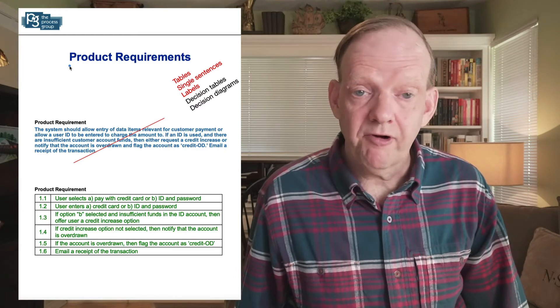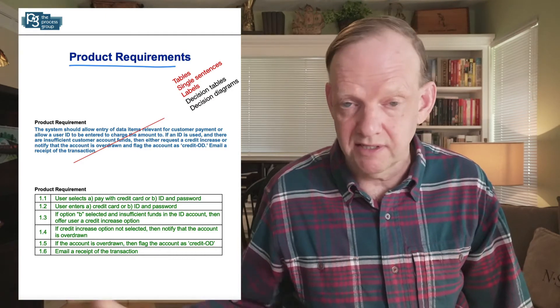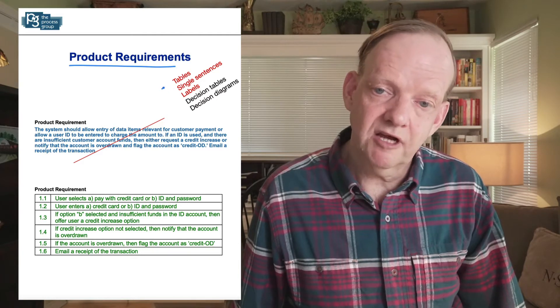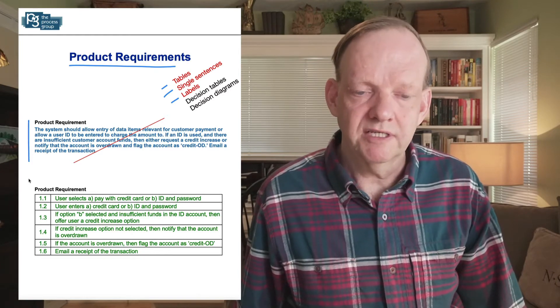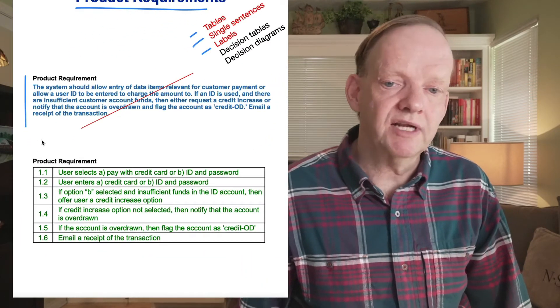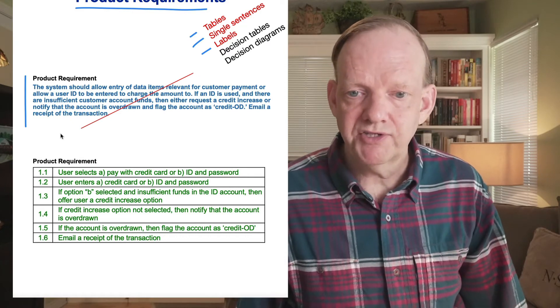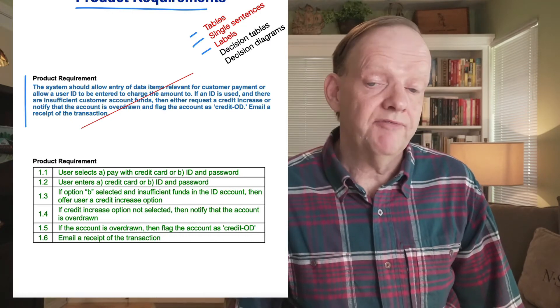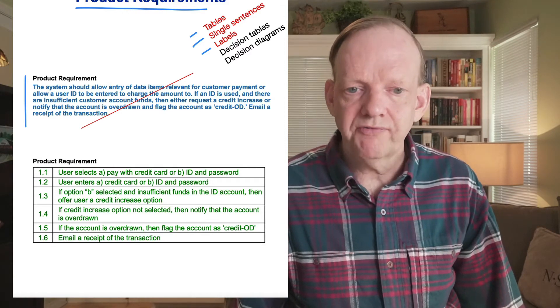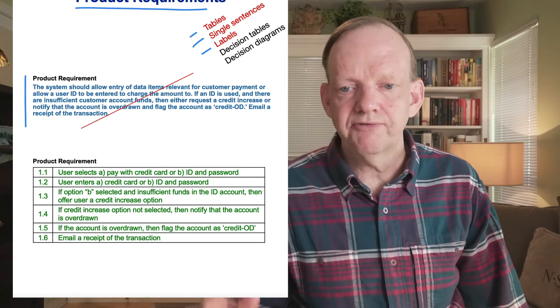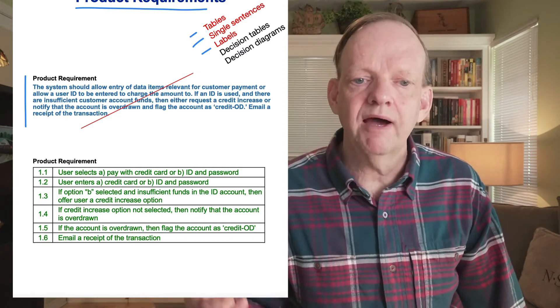So our next example are the product requirements. These are worthy of getting right at the beginning because you're going to have people code and test these things later on. We're going to use the same example here of tables, single sentences and labels. If you read the requirement here, it is very ambiguous. The system should allow data entry for relevant items of customer payment or allow a user ID to be entered to charge the amount to. There's two items there. If an ID is used and there are insufficient funds, then either request a credit increase or notify the account is overdrawn, and then flag the account is overdrawn.